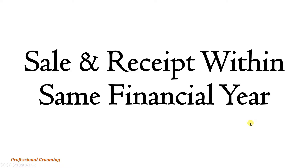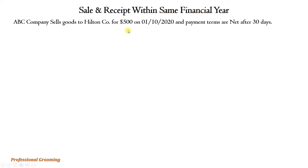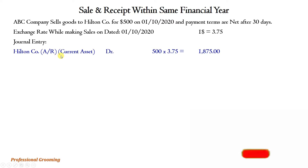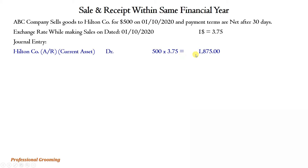Now let's make journal entries for sale and receipt within the same financial year. ABC company sells goods to Hilton company for $500 on 1st October 2020 with net 30-day payment terms. The exchange rate on 1st October 2020 is $1 = 3.75. Journal entry: debit Hilton company accounts receivable (current asset) $500 × 3.75 = 1,875; credit sales/export income account 1,875.